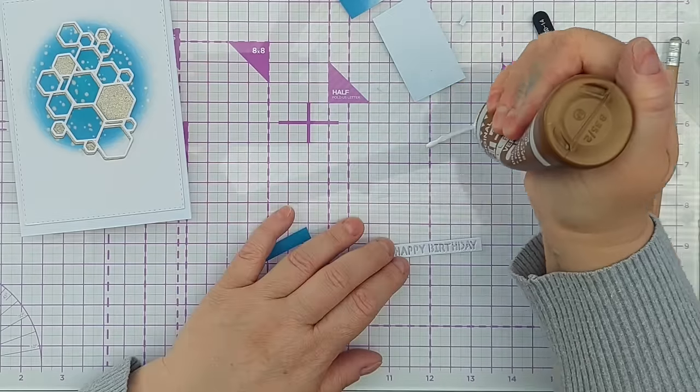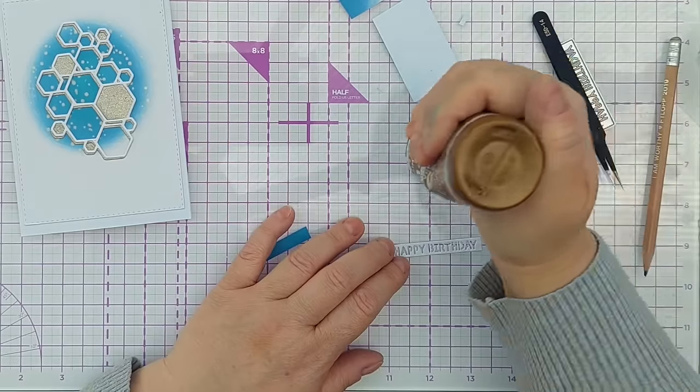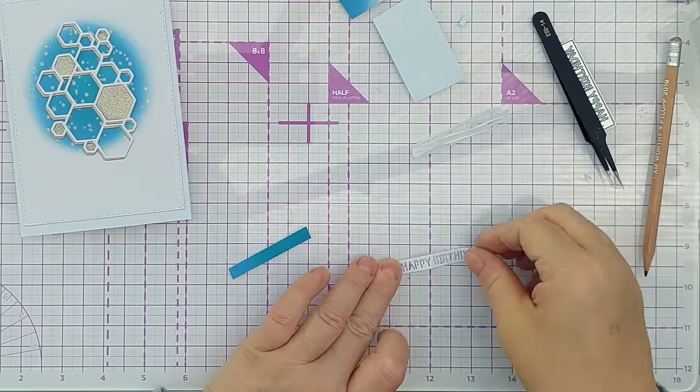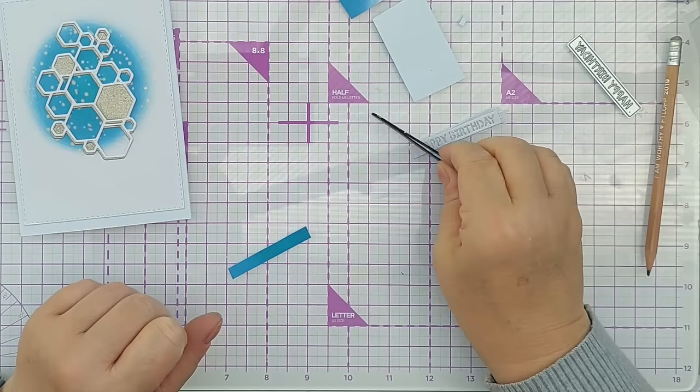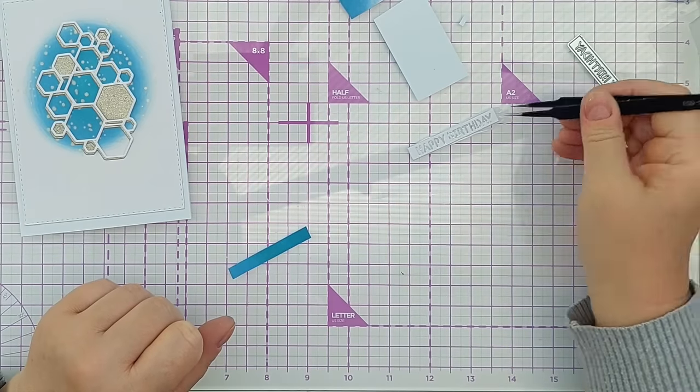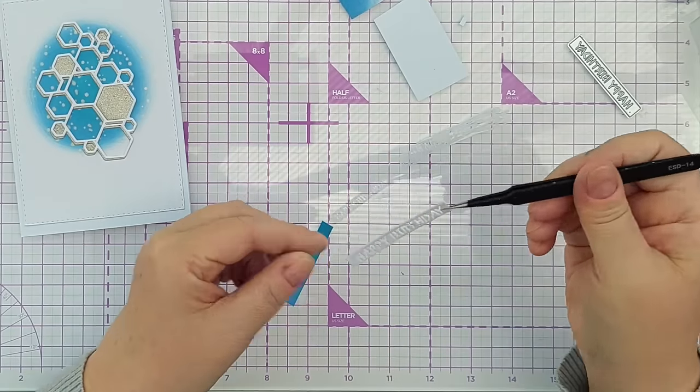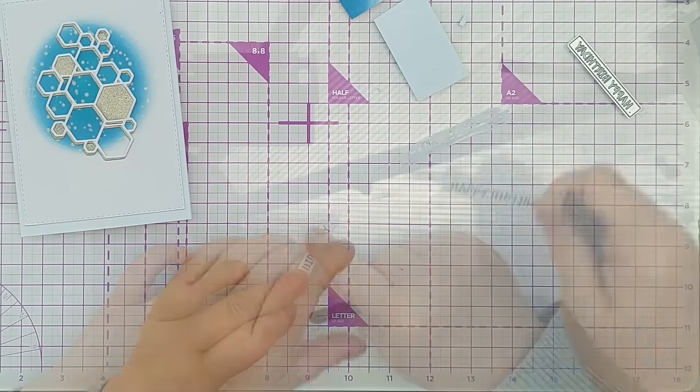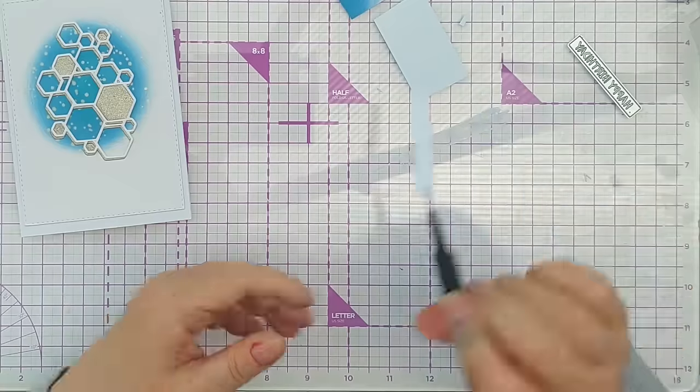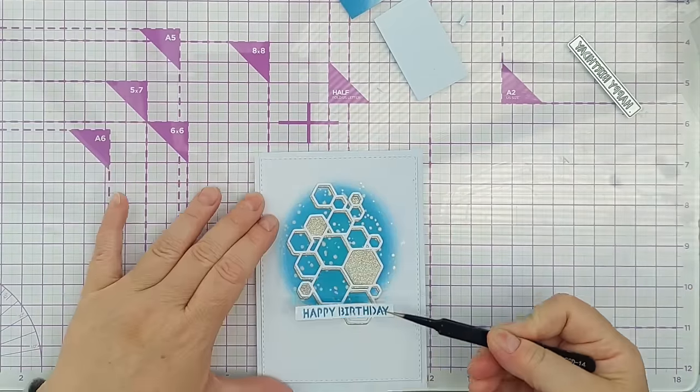And here we go with the high-tech glue again. We'll just smooth that out a bit like that. Press that down. Make sure it all gets a bit of glue all over the back.